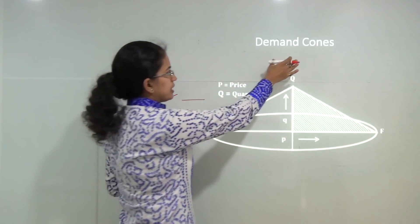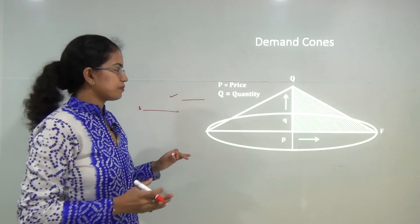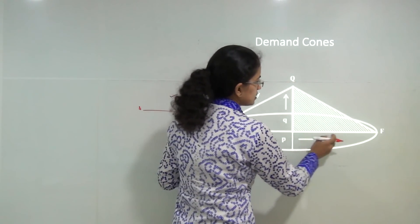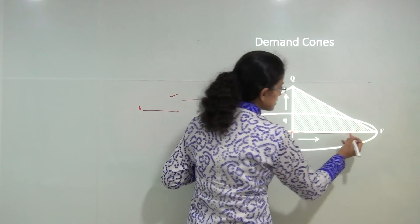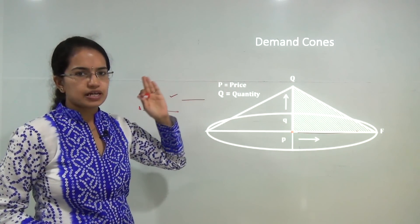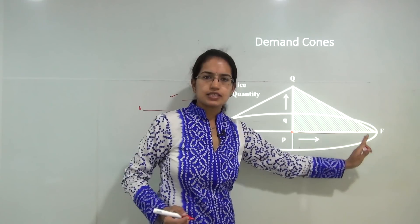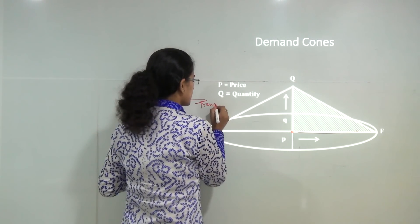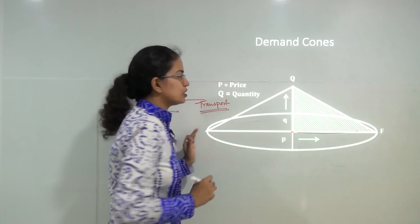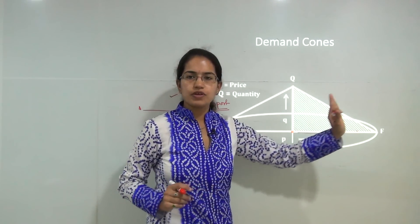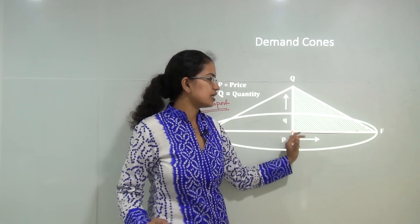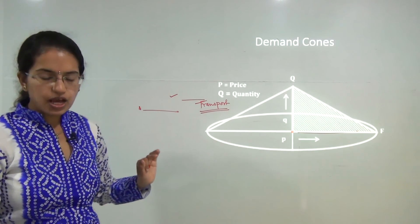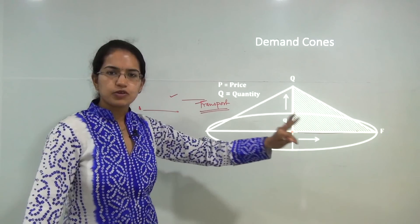The first concept Lösch explained was the demand cone. P is the price that varies and Q is the quantity demanded. As you move away from the city center, the price increases and hence the quantity demanded decreases. This price increase is due to rising transportation cost, which becomes a significant factor as you move away from the center of production. So quantity demanded decreases as you move further from the main production center.